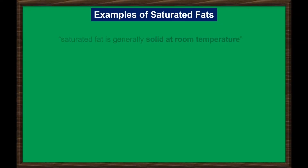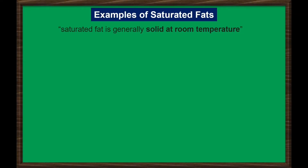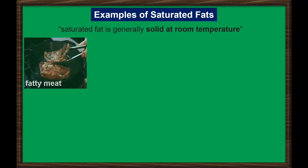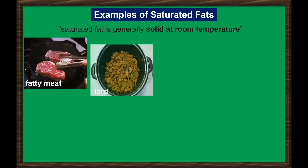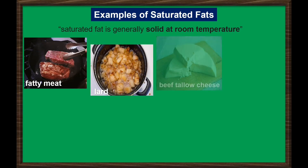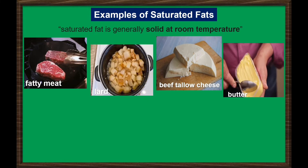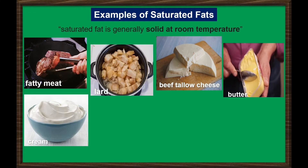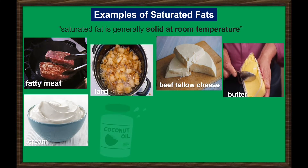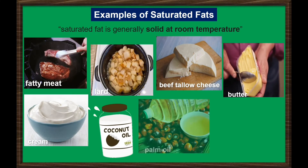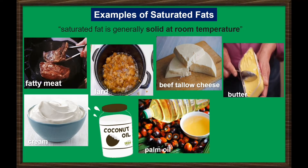Saturated fat is generally solid at room temperature. The main dietary sources of saturated fat are fatty meat, lard from animal fats, tallow, cheese, butter, cream, coconut oil, palm oil, and cocoa butter.